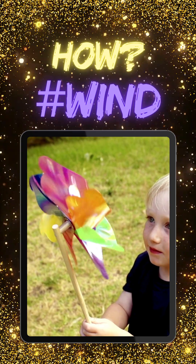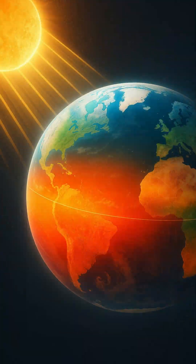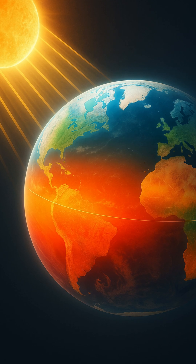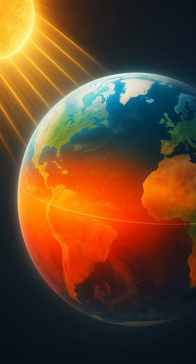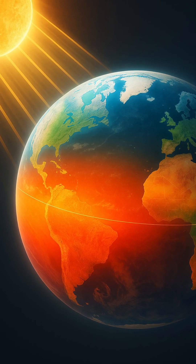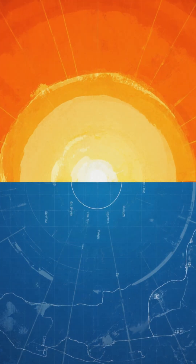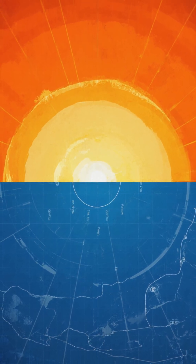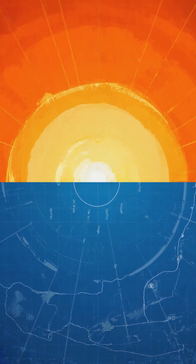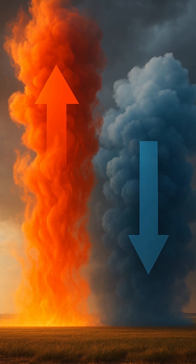How do winds form? Let's learn together. The sun's rays don't heat the earth evenly — regions near the equator receive more sunlight than those at higher latitudes. This in turn causes air temperatures to vary across different areas.